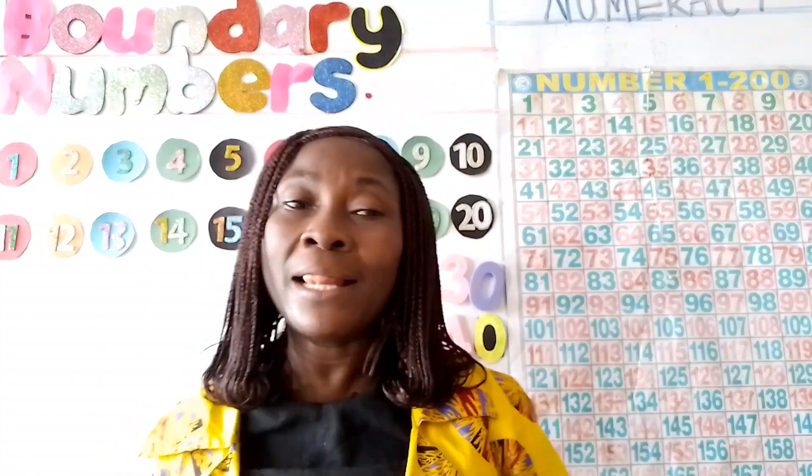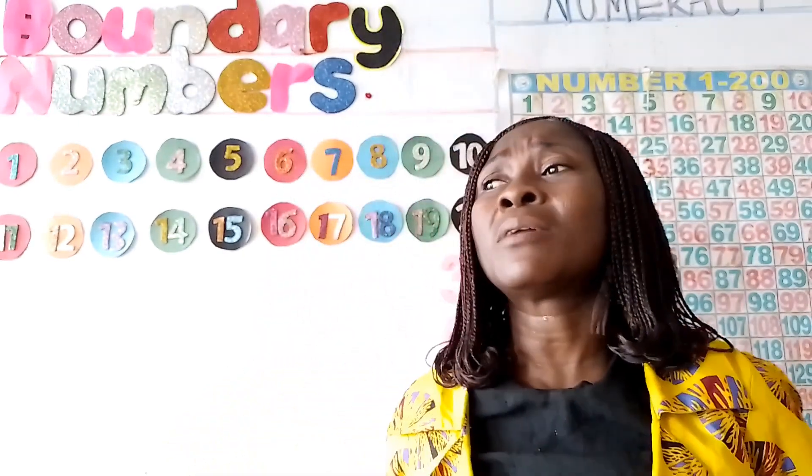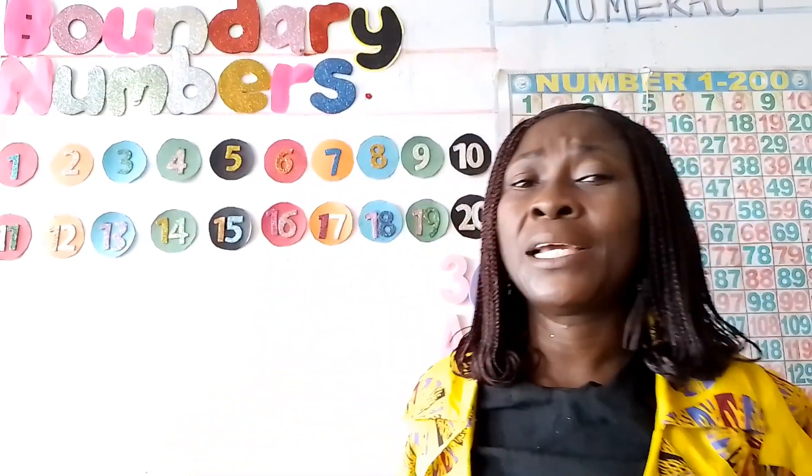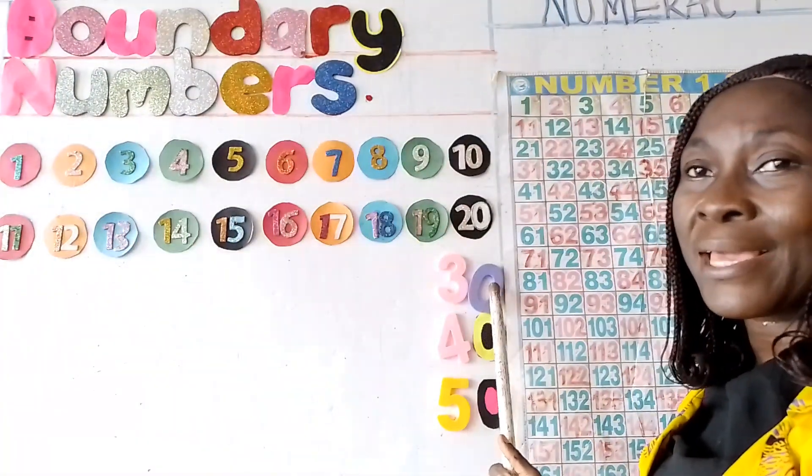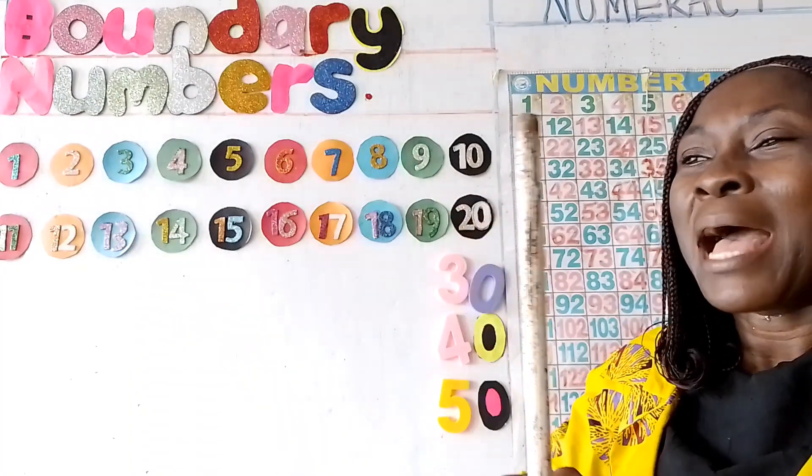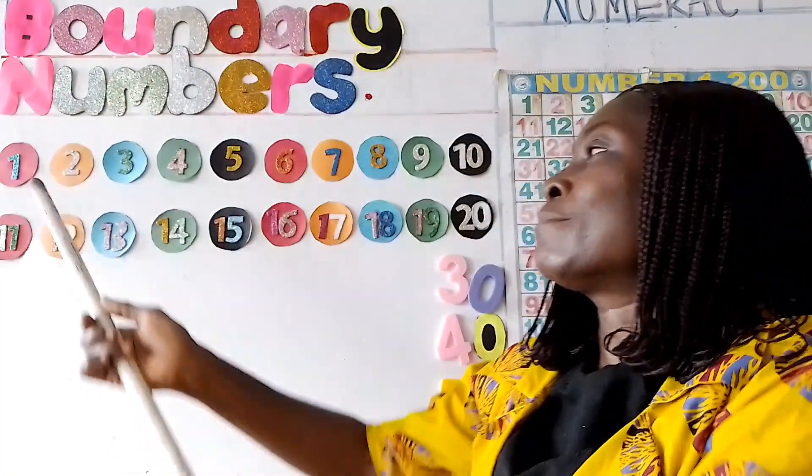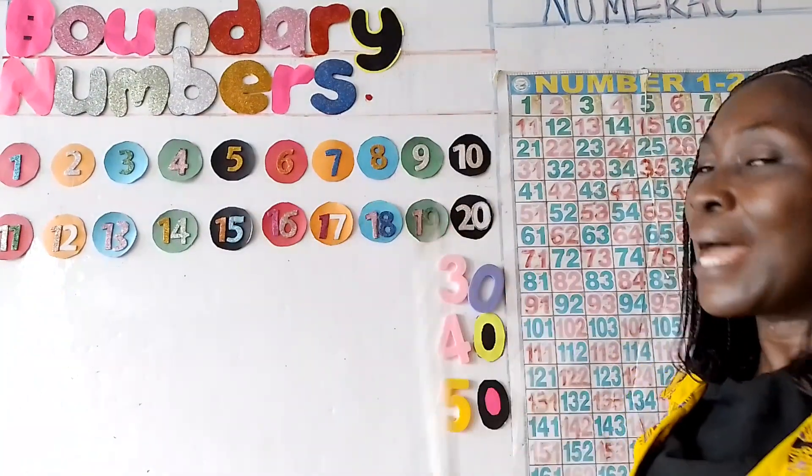I discovered that many early learners in numeracy find it difficult to get their boundary numbers. Why? Because most of them have difficulty in placing their numbers on the number line.